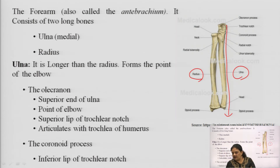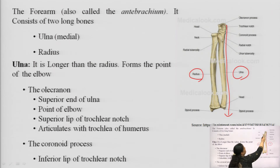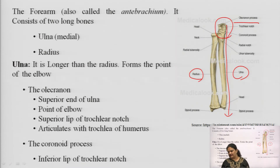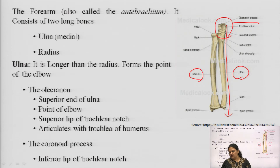The starting tip of the ulna is the olecranon process, which is the superior end of the ulna. It makes a concave-like articulation connecting to the humerus at the elbow — this is the olecranon joint. It is the superior lip of the trochlear notch and articulates with the trochlear end of the humerus. Then we have the coronoid process, which is the inferior lip of the trochlear notch.